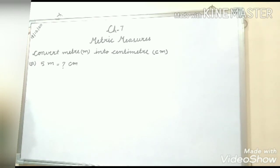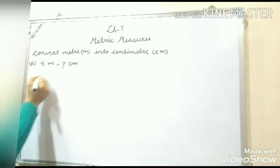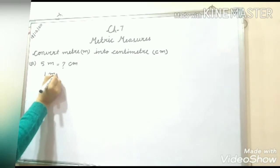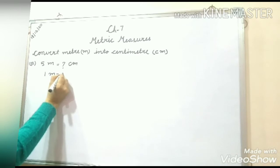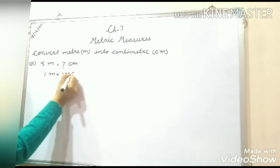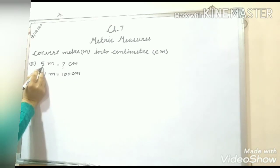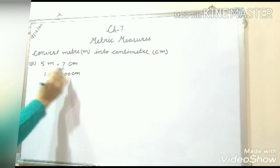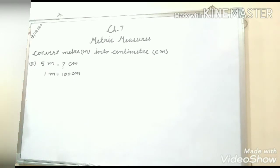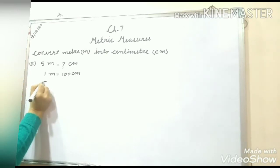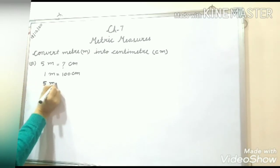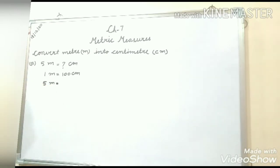As you know, I taught you in the last class — 1 meter is equal to how many centimeter? That is 100 centimeter. Now what we have to do here is convert 5 meter into centimeter. We have to find out how many centimeter will be in 5 meter. We will write 5 meter and now we have to convert it into centimeter.